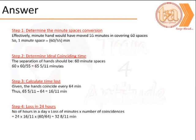Next we look at how much of these occurrences happen in a day. That is nothing but the total number of hours in a day times the time lost times the number of times this coincidence happens. That is 32 8 by 11 minutes, and that is the answer.